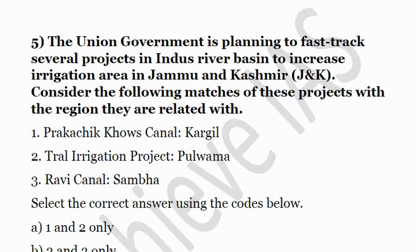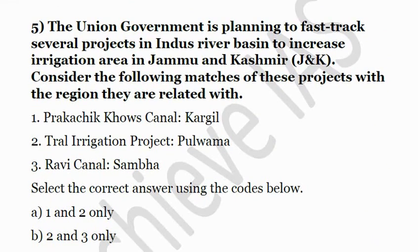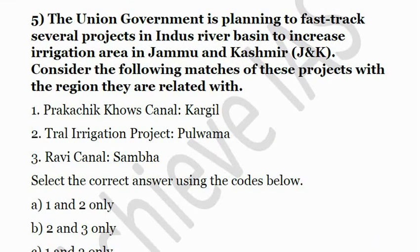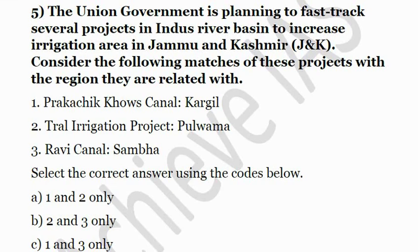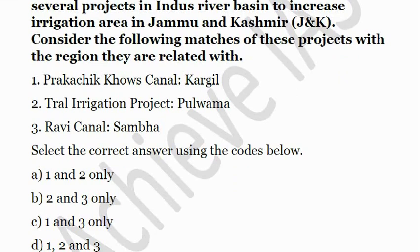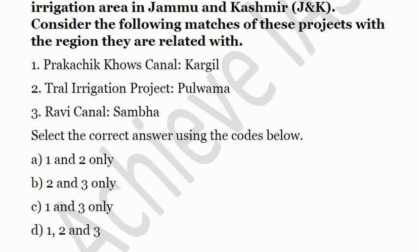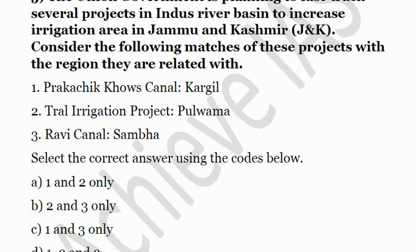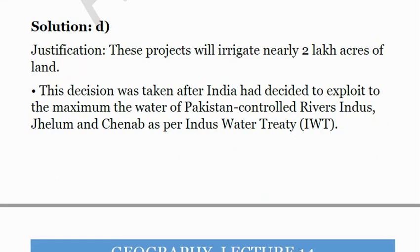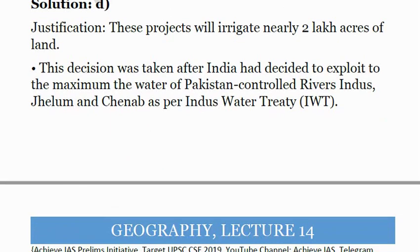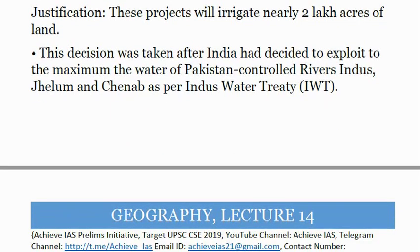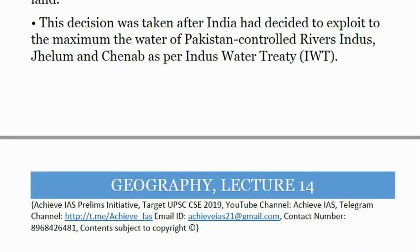The fifth question: the Union government is planning to fast-track several projects in the Indus River Basin to increase irrigation area in Jammu and Kashmir. Consider the following matches — first, Pragshik Khos Canal with Kargil; second, Tral Irrigation Project with Pulwama; third, Ravi Canal with Samba. All these projects are rightly matched with their regions, so the solution is D. India is considering using its entire water allocation from Pakistan-controlled rivers — Jhelum and Chenab — as per the Indus Waters Treaty, trying to exploit to the maximum the water of these Pakistan-controlled rivers.